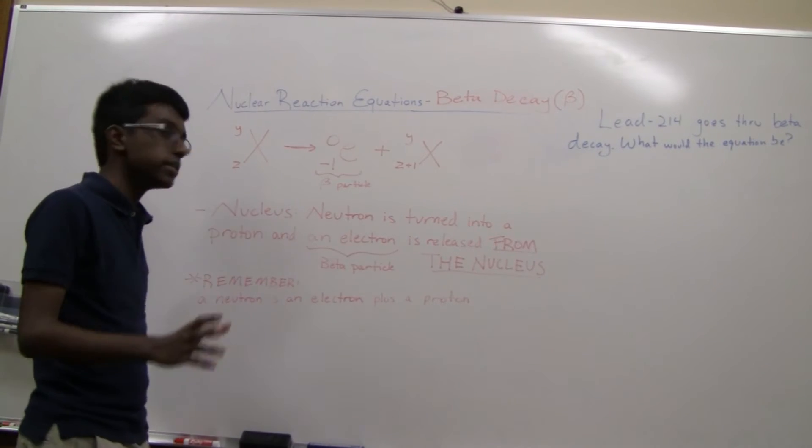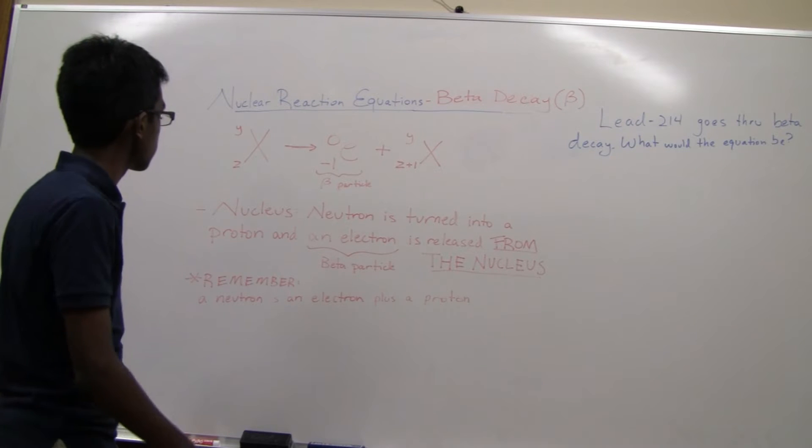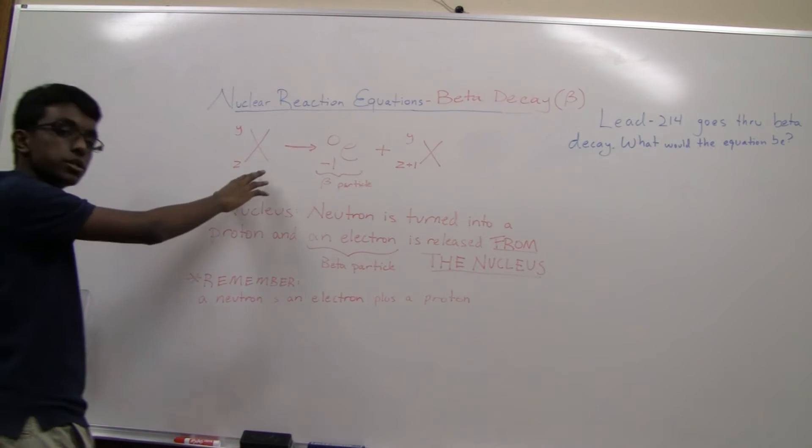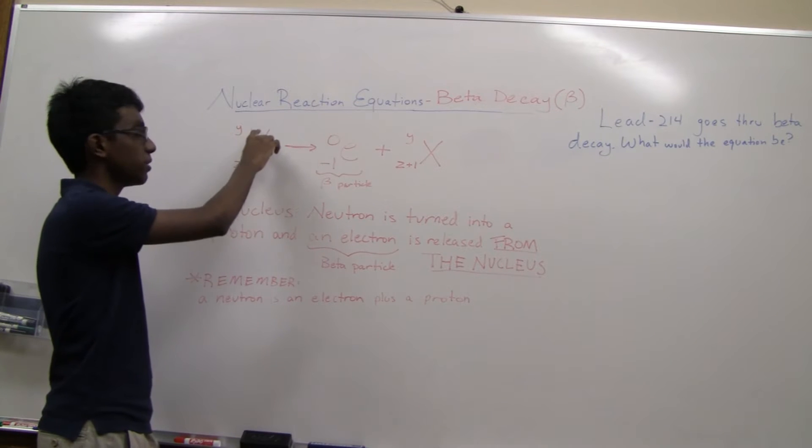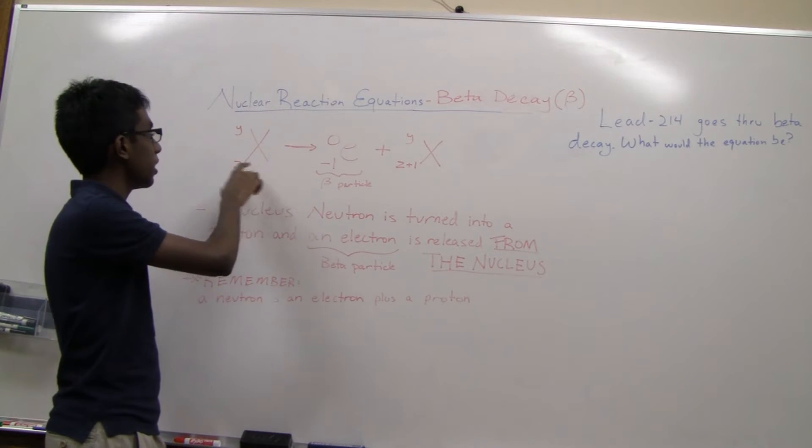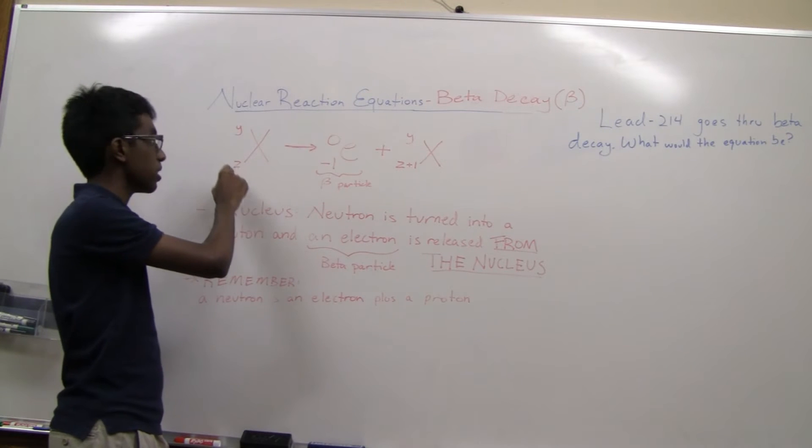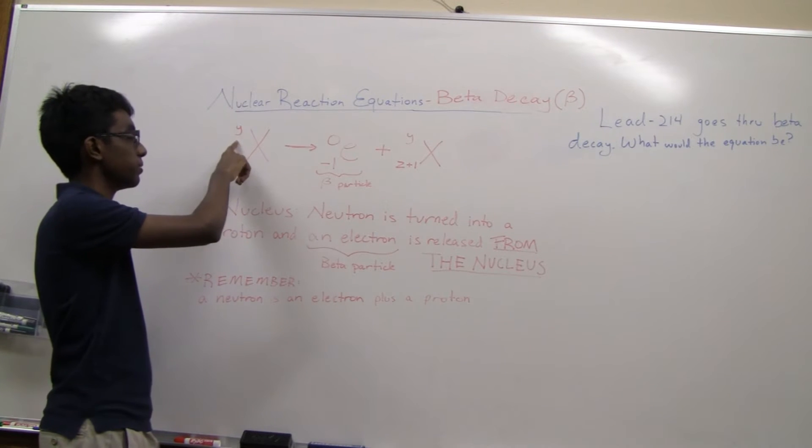So how do we write beta decay equations? We have our original atom here, which has the symbol of X, Z as its atomic number, Y as its mass number.